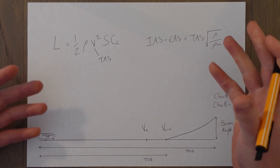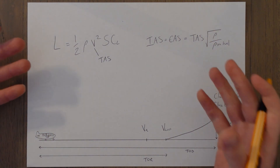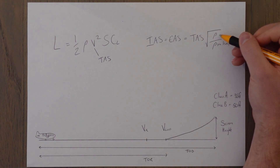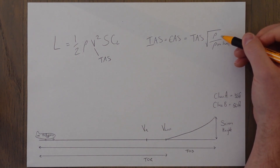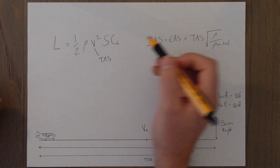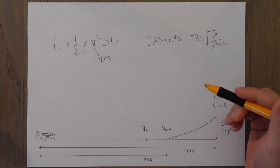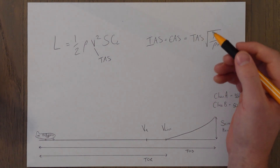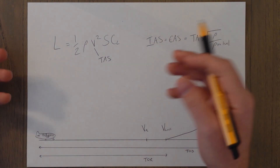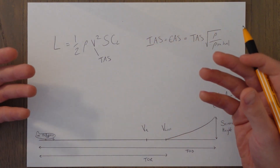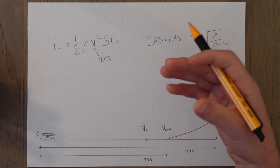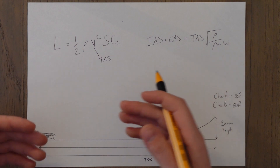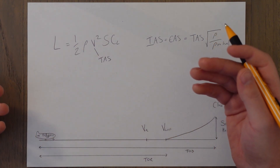What that means is: if we are at an airport above sea level where the density is less, then for the same indicated airspeed as at sea level, the true airspeed would actually be faster. That means the air traveling over the wings is faster, and to get the air traveling over the wings faster we have to go faster down the runway, using up more distance to do so.